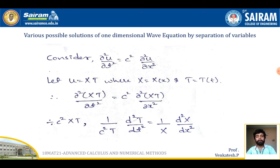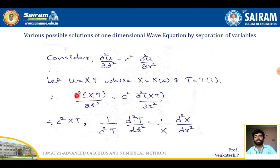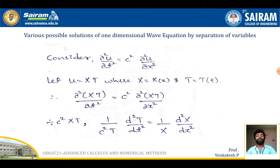I am going to incorporate the value u = X·T into the given wave equation. I will get ∂²(XT)/∂t² = c² · ∂²(XT)/∂x². Since X is independent of t, I can take X outside to get X · ∂²T/∂t². Since T is independent of x, I can take T outside to get T · ∂²X/∂x². So I obtain X · ∂²T/∂t² = c² · T · ∂²X/∂x².